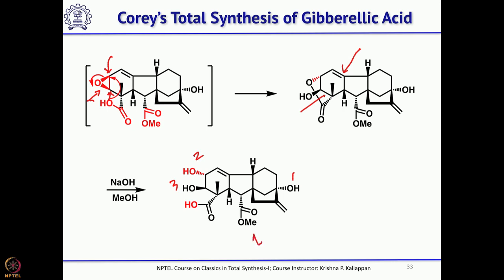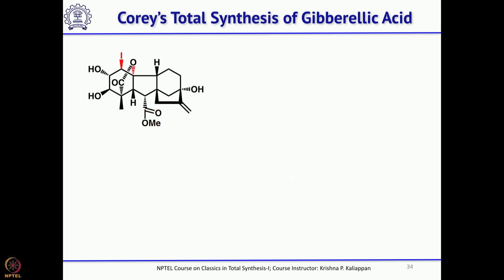You have a trihydroxy carboxylic acid having an ester and two double bonds — four functional groups total, quite sensitive. Then the key iodolactonization was carried out: treat with iodine in the presence of sodium bicarbonate to form the iodolactone.